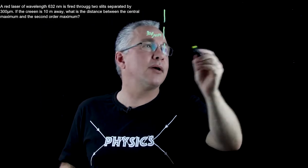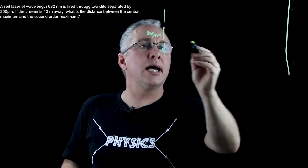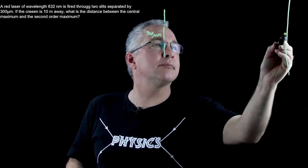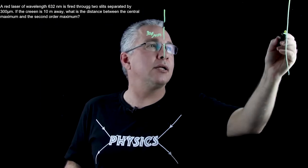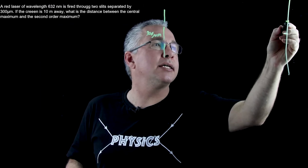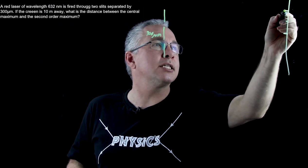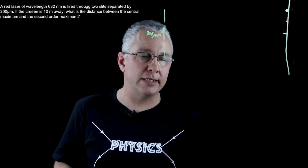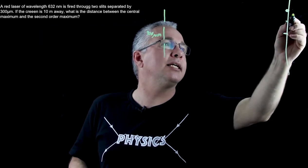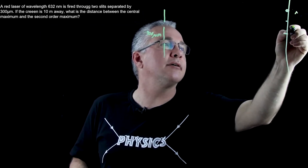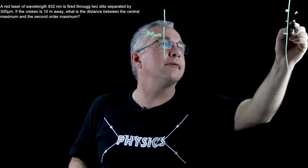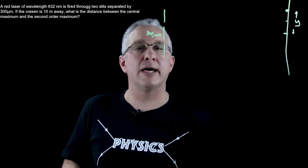We are told that we have a screen on the other side and we have our central maximum right there. We are asked where is our second maximum. So that's the one that we're interested in right there and we really need to know what this distance here from there to there, and we're going to call that y.